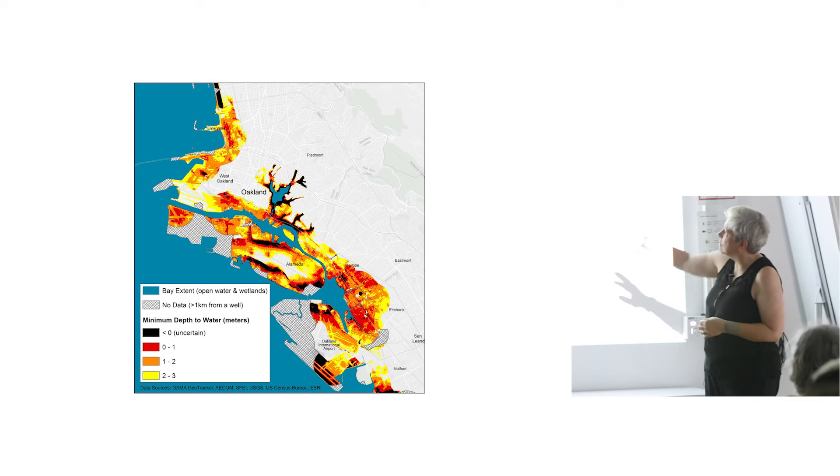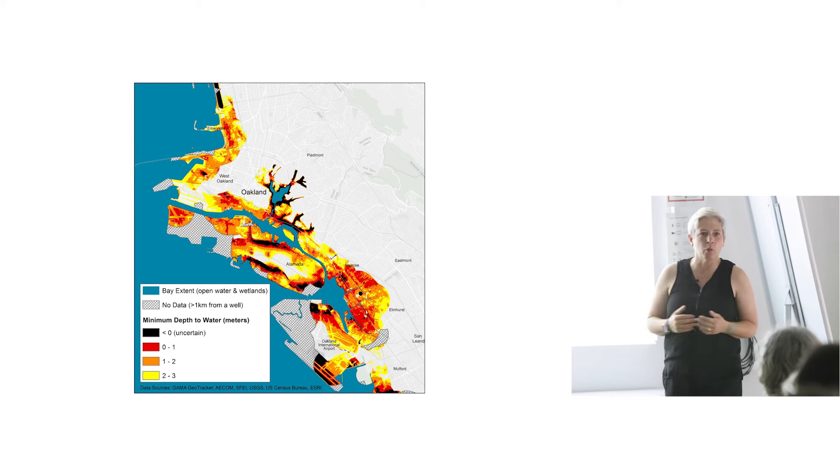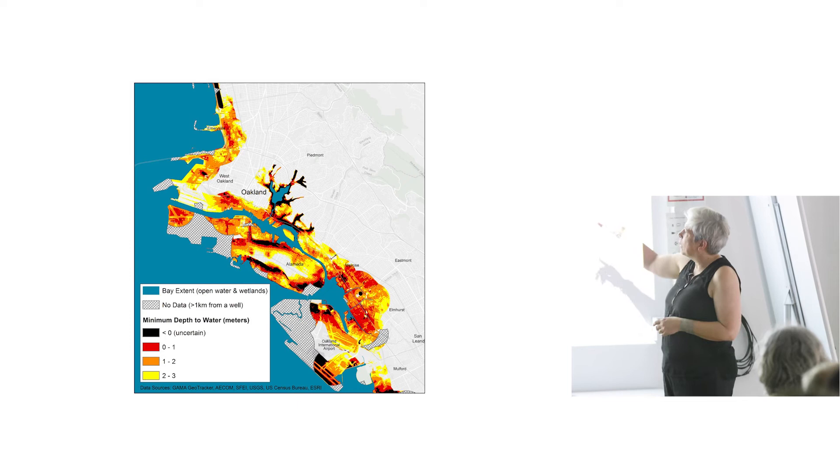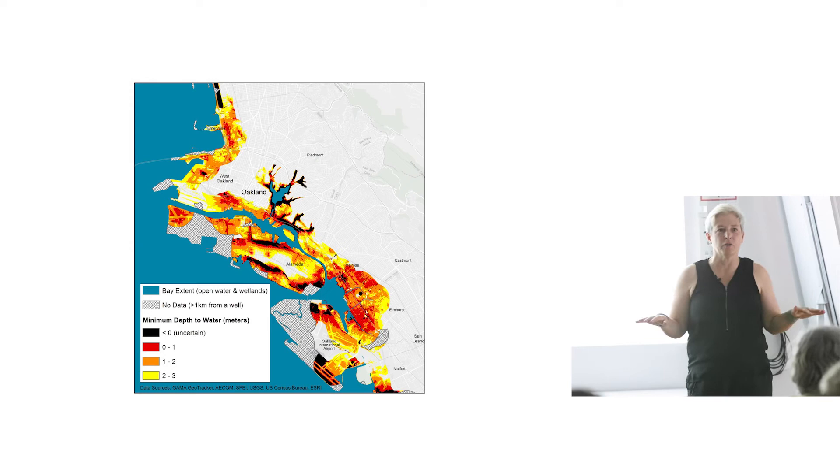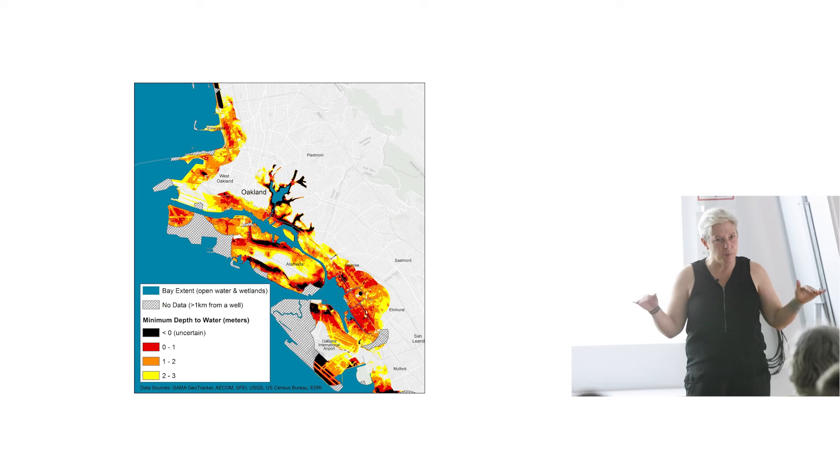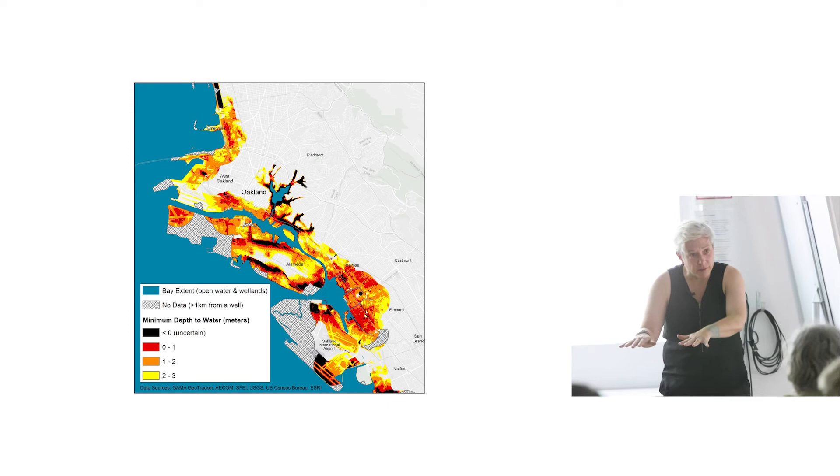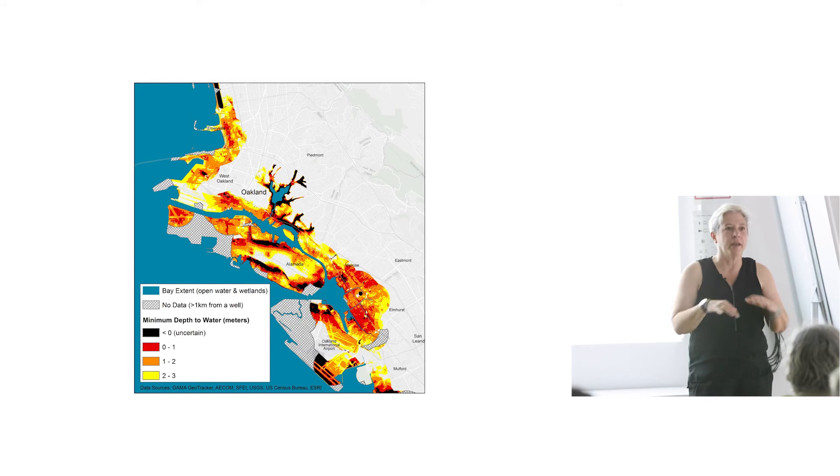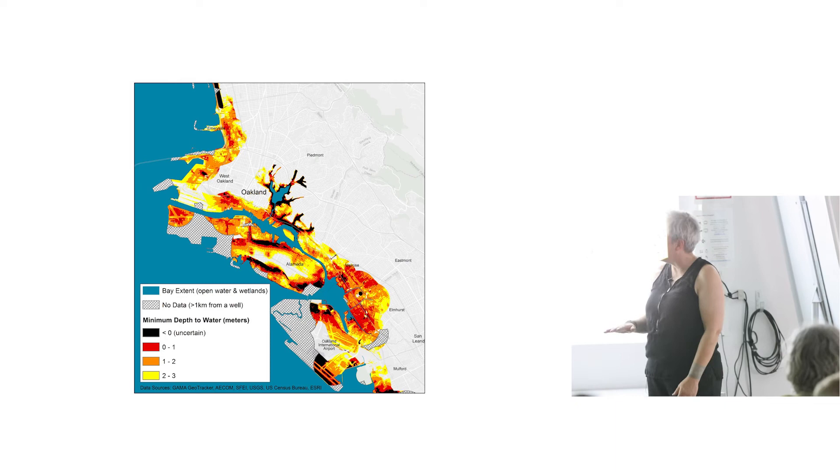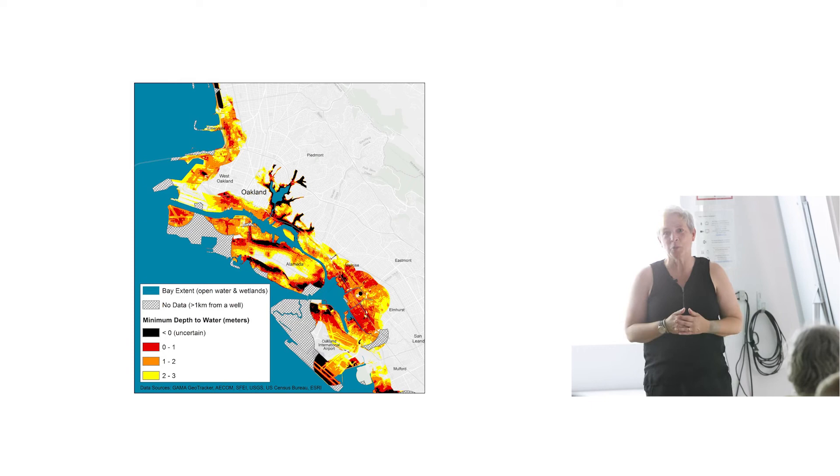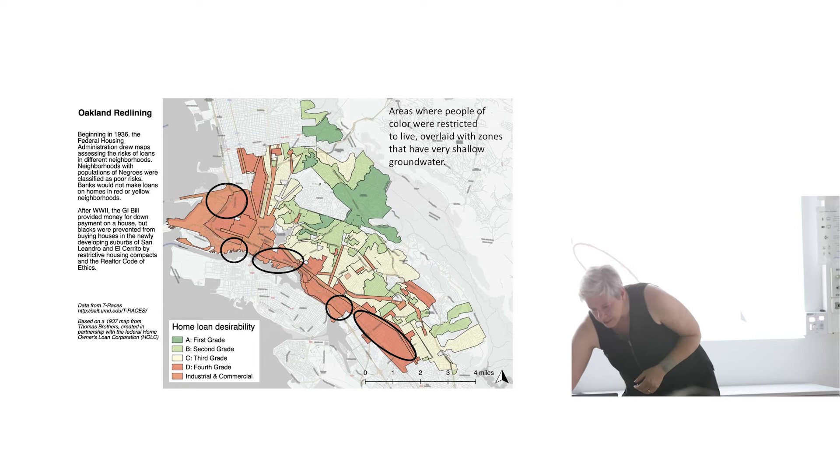If you zoom into a particular area, this is the city of Oakland and Alameda is that island. The hatch marks are the areas where we weren't confident that we had enough data. The black areas are where it looks in our maps as if the groundwater should already be at the surface. But that's because we're looking at a static groundwater table with that interpolation method. In the real world, if water comes up to the surface, it flows off. So those black areas are places where we would already have emergent groundwater in the wet season if we built a levee.